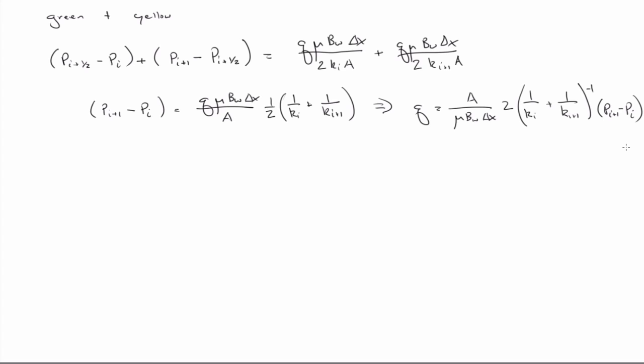So then if we compare, remember before we had that K_i+1/2 A. And we can see that this part of the equation and that part of the equation match. So therefore, we can infer that K_i+1/2 must equal 1 over (1/K_i + 1/K_i+1) inverse.